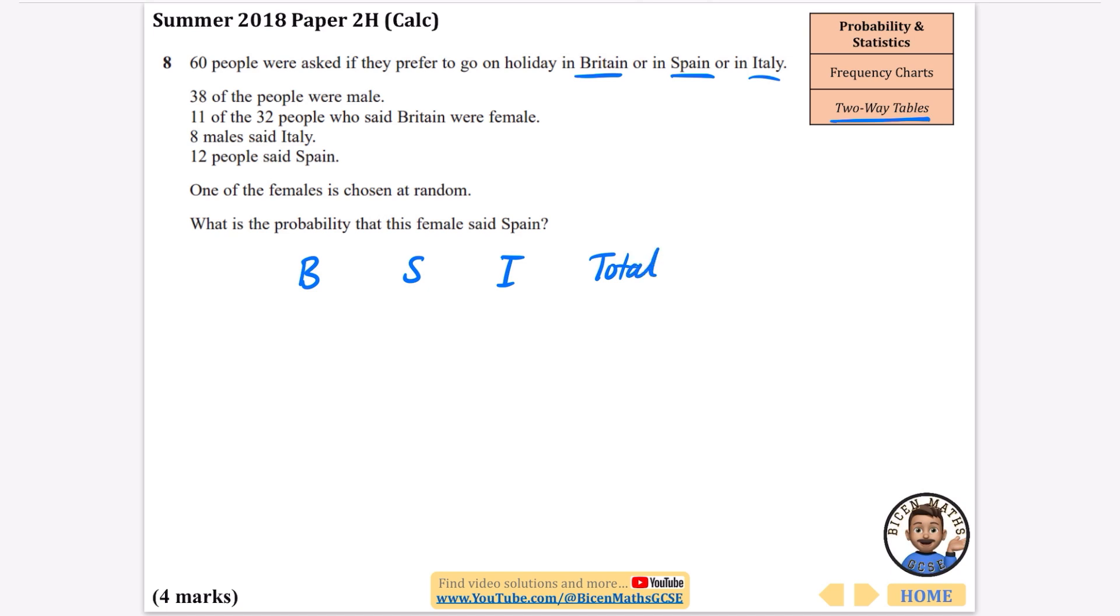And then along the side we've got male and female and we're also going to have total, and then what we can do is just make this into a table and then we're going to just try and fill in some of the information here.